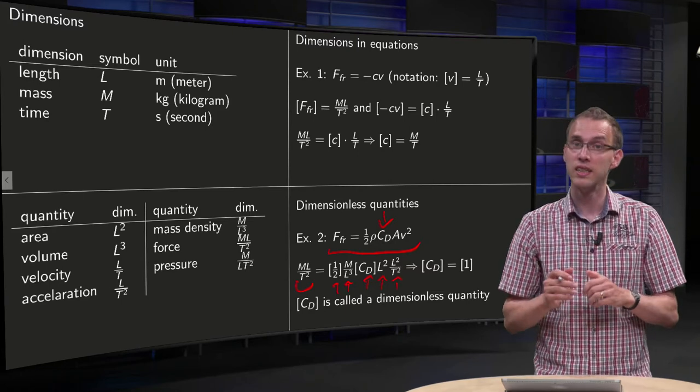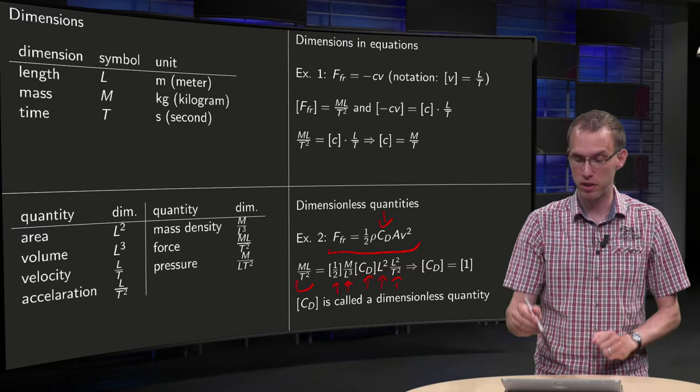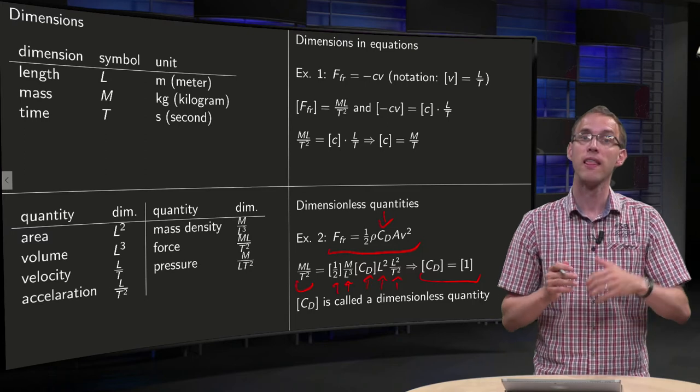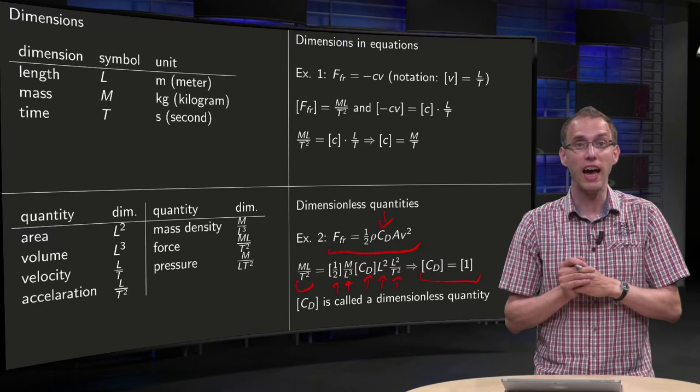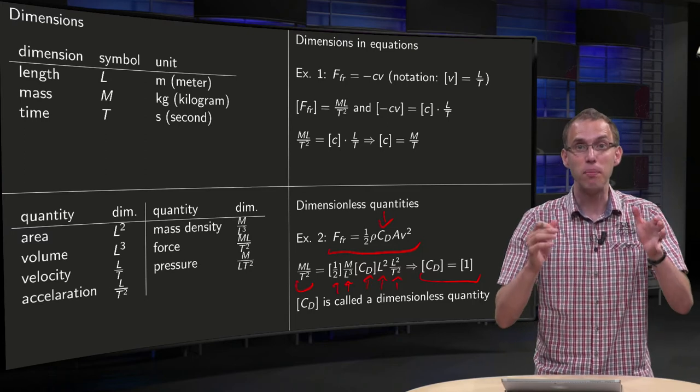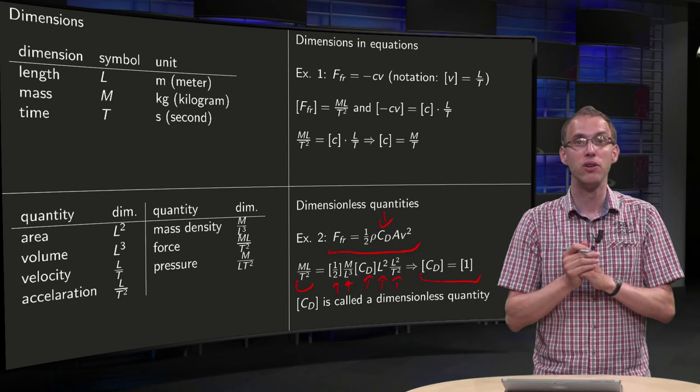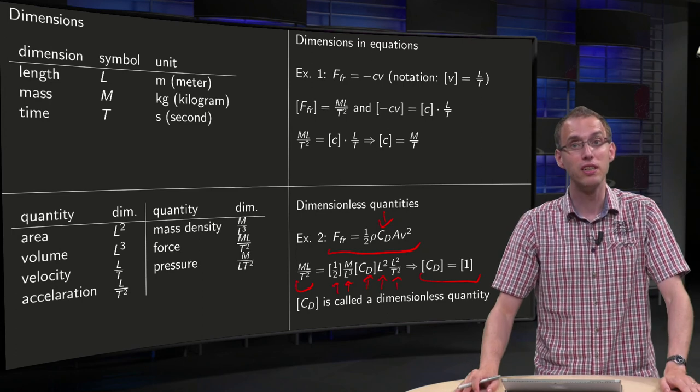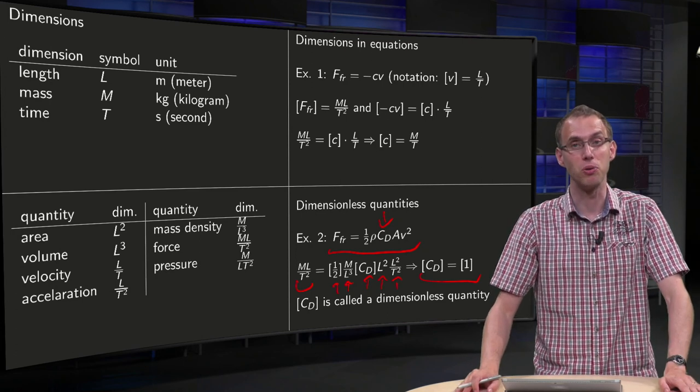And if you then compute what the dimension of Cd is, you see that the dimension of Cd is just 1, and that means that actually our Cd is dimensionless. So if the dimension of some constant is 1, that's really nice, because that means that we have a so called dimensionless quantity, a dimensionless constant.